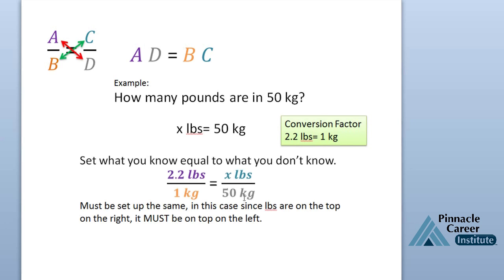What we're going to do is set what we know equal to what we don't know. We know 2.2 pounds equals 1 kilogram, so that's right here. And we don't know how many pounds is in 50 kilograms. It's very important that when you set this up, if pounds is on the top on the right, it must be on the top on the left. Here you can see I have 2.2 pounds here, x pounds here, 1 kilogram here, 50 kilograms here.